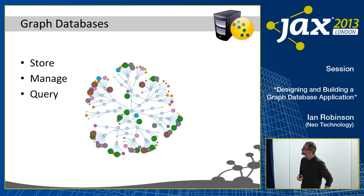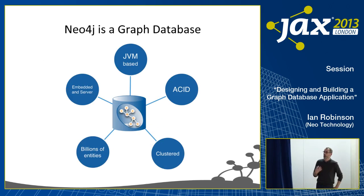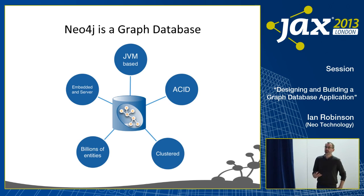That's exactly what Neo4j is — a graph database, an online transactional system, the kind of thing you might use to back a web application, mobile platform, or desktop app. It's JVM-based, written almost entirely in Java, with some of the query language parsing written in Scala. It's about eight or nine years old and has been in production 24/7 for roughly nine years.